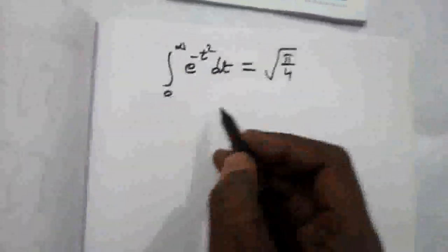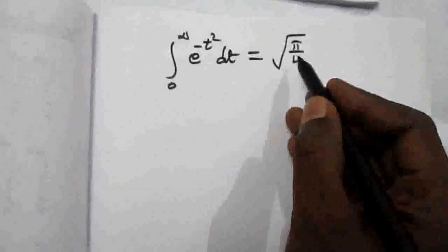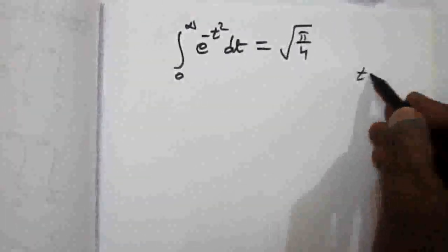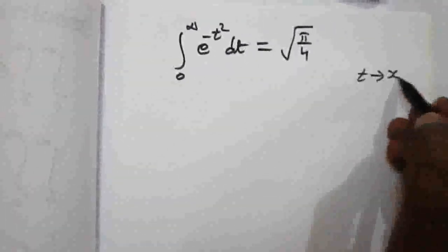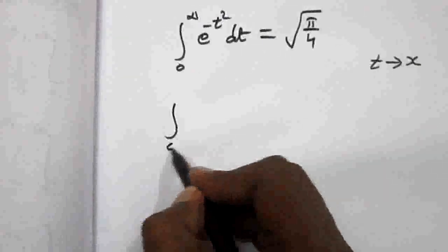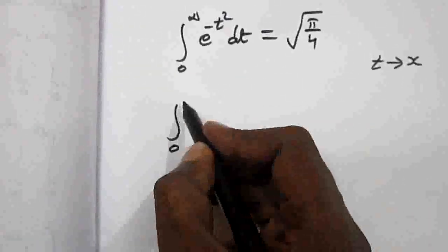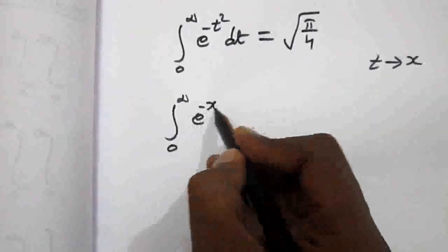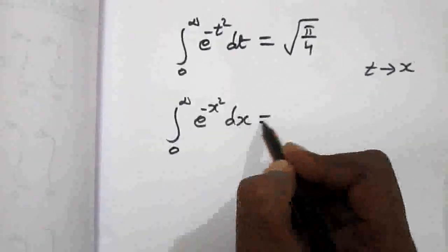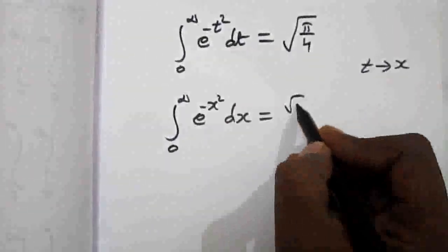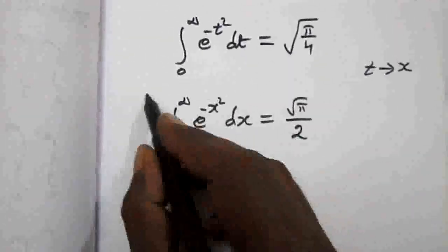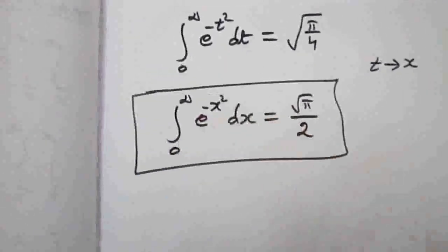Since t is a dummy variable, changing t back to x: the integral from 0 to infinity of e to the power minus x squared dx equals root π divided by 2. This is the answer of the problem.